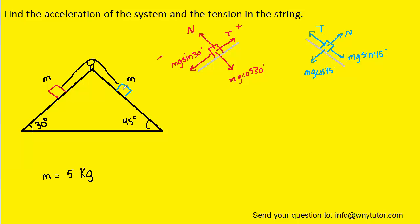As stated, the blue box is going to be accelerating down its ramp. So let's call down that ramp the positive direction and then up that ramp the negative direction.